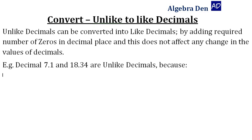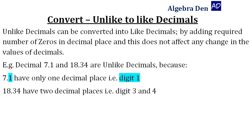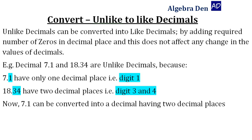For example, decimal 7.1 and 18.34 are unlike decimals because 7.1 has only one decimal place, that is digit 1, while 18.34 has two decimal places, that is digits 3 and 4.